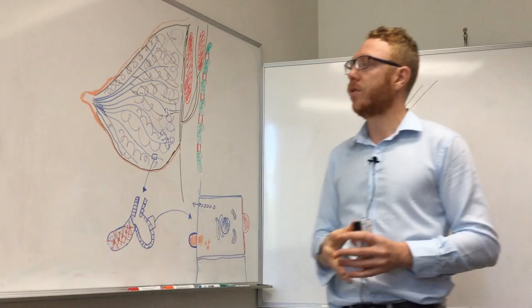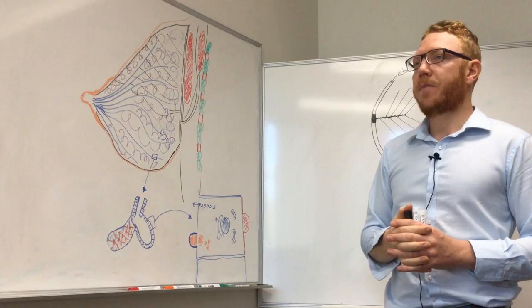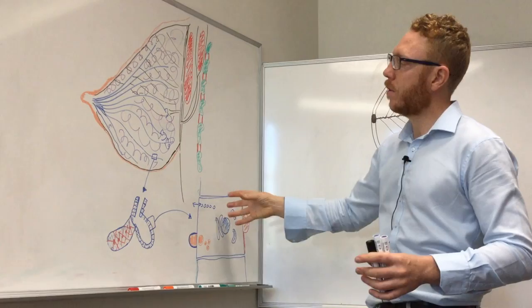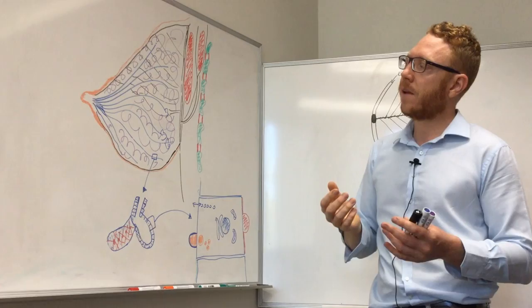Prolactin secretion is highest about 30 minutes after the feed, which further develops the milk. It's a demand-driven system — the more milk that leaves, the more prolactin comes down and the more production there is. If there's less demand, there's less production. That's how they work together.